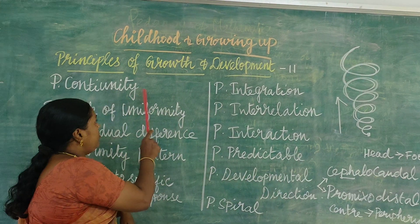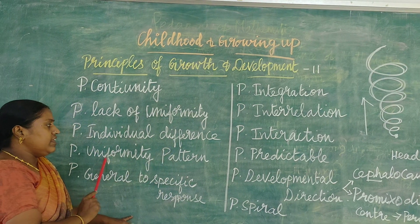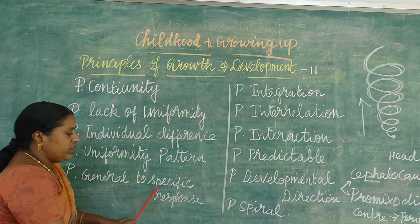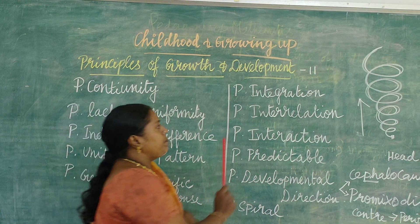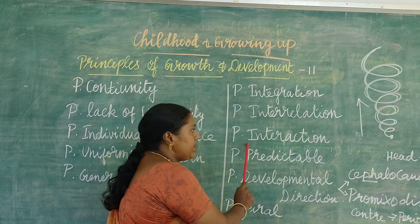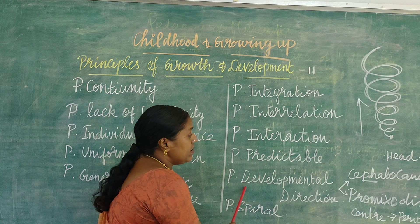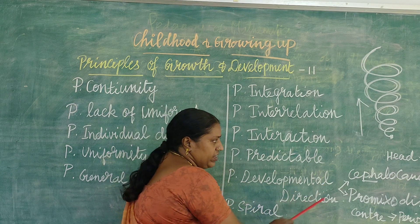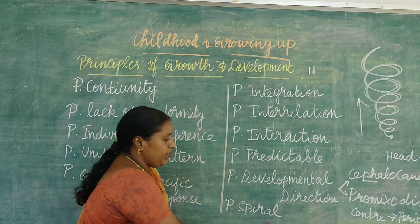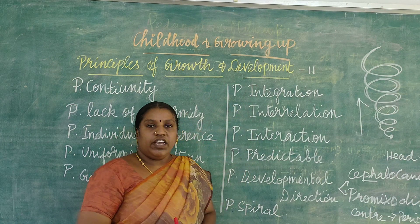So now, you should be clear about the 11 principles of growth and development: the principle of continuity, principle of lack of uniformity, principle of individual differences, principle of uniformity of pattern, principle of general to specific response, principle of integration, principle of interrelation, principle of interaction, principle of predictability, principle of developmental direction (cephalocaudal and proximodistal), and the principle of spiral development. Totally 11 principles. Thank you.